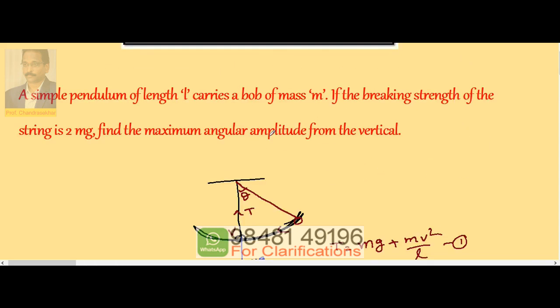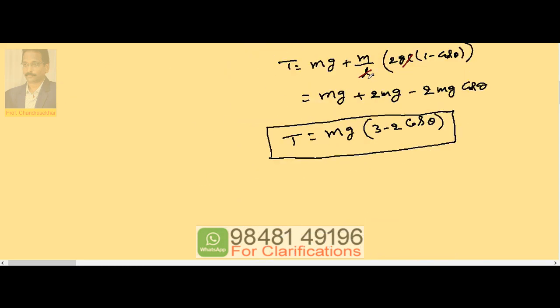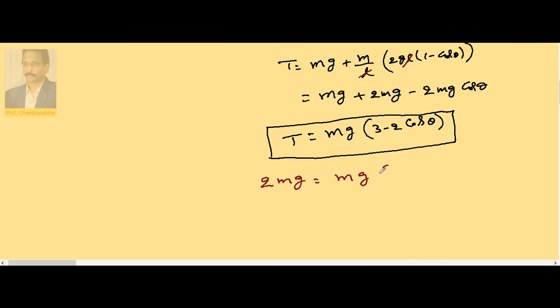Now according to the data, T is 2mg. The maximum tension it can stand is 2mg. So this is Mg into 3 minus 2 cosθ.